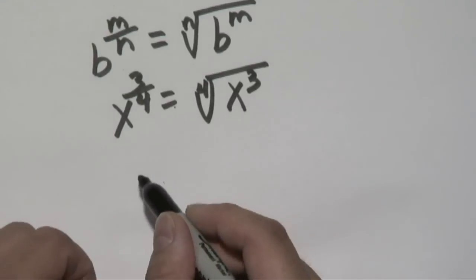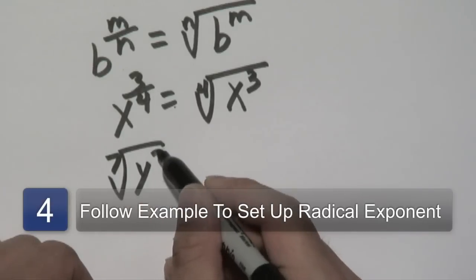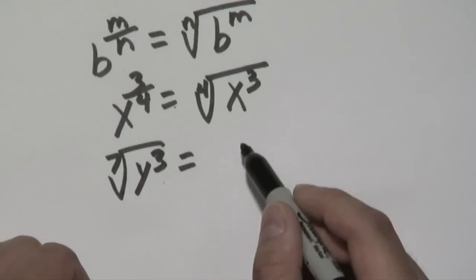Now conversely, if you have, let's just say, the seventh root of y to the third, then you would do the same thing.